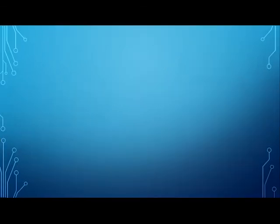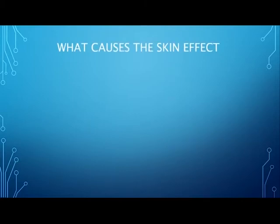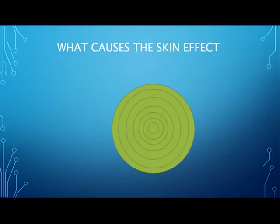To understand the causes of the skin effect, we consider the cross-sectional view of the conductor and imagine that there are an infinite number of small filaments. The center of the conductor is called the core, whereas the outer part is called the surface or skin of the conductor.